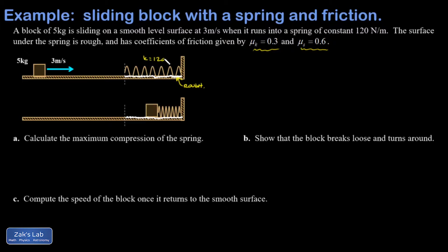My spring constant is 120 newtons per meter, and I'll just leave the coefficients of friction up there. I want to get the maximum compression of the spring, and we're going to attack this with conservation of energy. I have a non-conservative force doing work — that's the friction force — acting through this distance, which I'll call x. So what we're trying to solve for is x, and friction does work over that distance x.